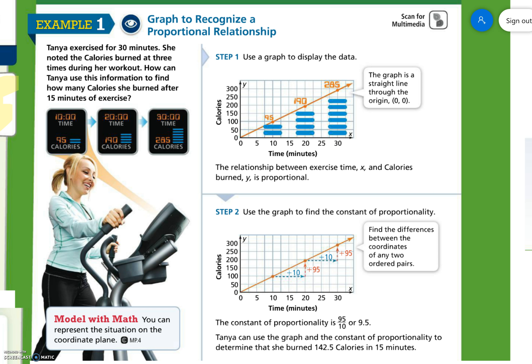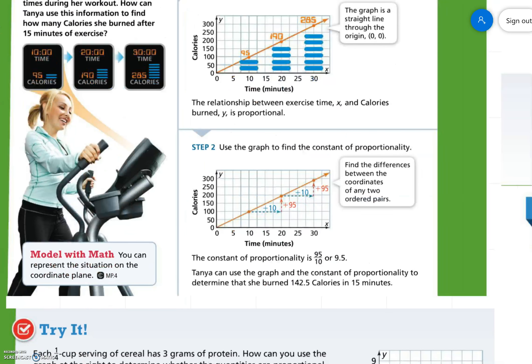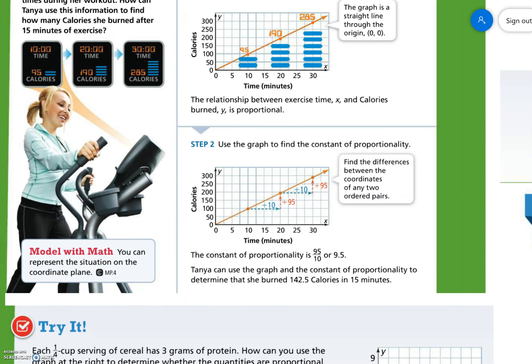Well, we could plot the points: (10,95), (21,90), (30,280). And we could use the graph to find the constant of proportionality. So the constant of proportionality is 95 over 10, or 9.5. They get that from seeing how much they go over and how much they go up between each point.